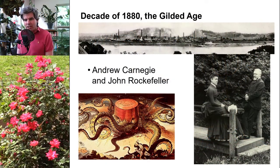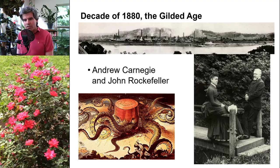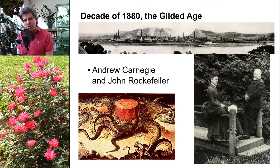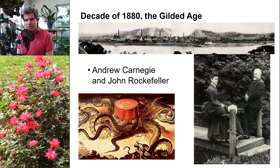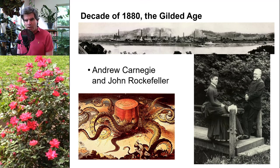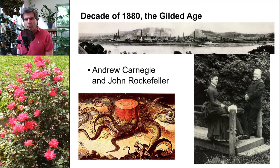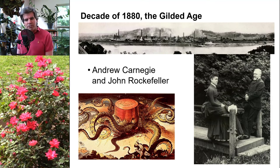We are now ready to discuss the decade of 1880, a time sometimes called the Gilded Age. The term, attributed to Mark Twain, refers to gilding — a thin layer of gold applied to an object to make it look solid gold. The gilded age describes a society with a large impoverished class underneath and a thin layer of wealthy gilding on top, including a small class of wealthy people and the capitalist industrial system that sustains their wealth.